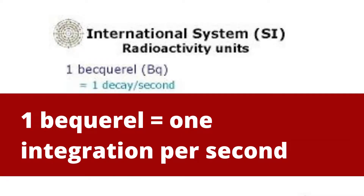So, the Becquerel is the modern SI unit of radioactivity. Its symbol is Bq, defined as 1 disintegration per second.